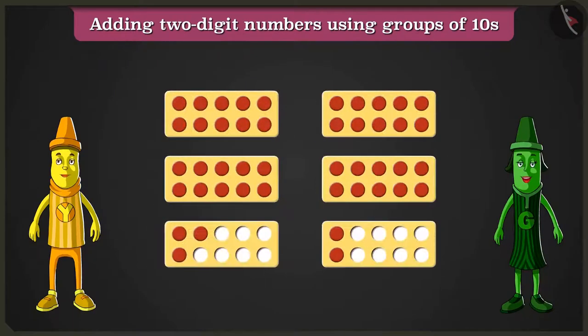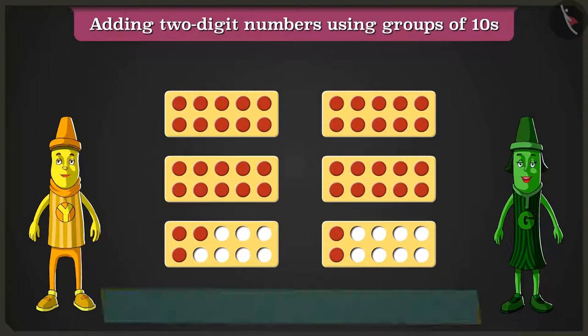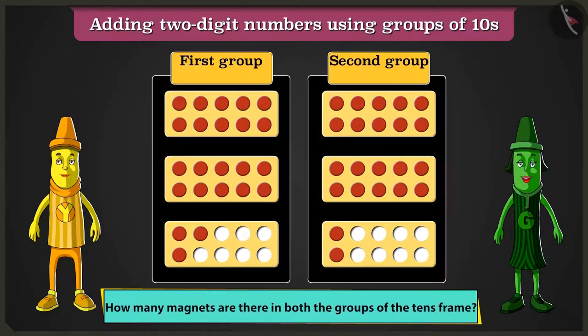Greeny, look, this is a tens frame. There are red magnets on the frame. Now, can you tell me how many total magnets are there in both groups of tens frame?